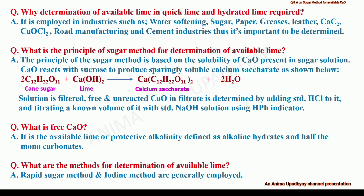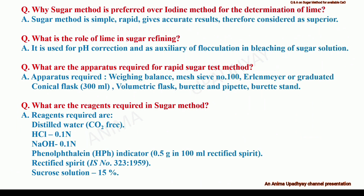We can calculate or determine the presence of available lime in the sample. What is free calcium oxide? It is the available lime or protective alkalinity, defined as alkaline hydrates and half the monocarbonates. What are the methods for determination of available lime? The rapid sugar method and iodine method are generally employed. Sugar method is preferred over iodine method because it is simple, rapid, gives accurate results, and is therefore considered a superior method. The role of lime in sugar refining is for pH correction and as an auxiliary of flocculation in bleaching of sugar solution.